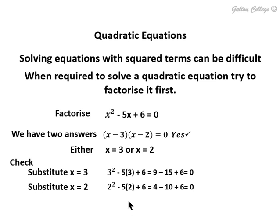If you put in x equals 2, we'd have 2 squared, minus 5 times 2, minus 5 times 2 plus 6. In other words, we'd have 2 times 2 is 4, minus 5 times 2 which is 10, minus 10 plus 6. 4 plus 6 is 10, minus 10 is 0. So both 2 and 3 are correct. We have 2 answers.